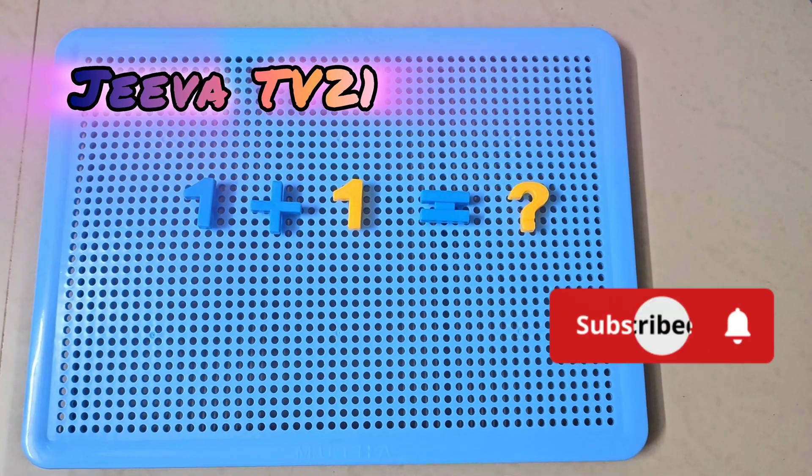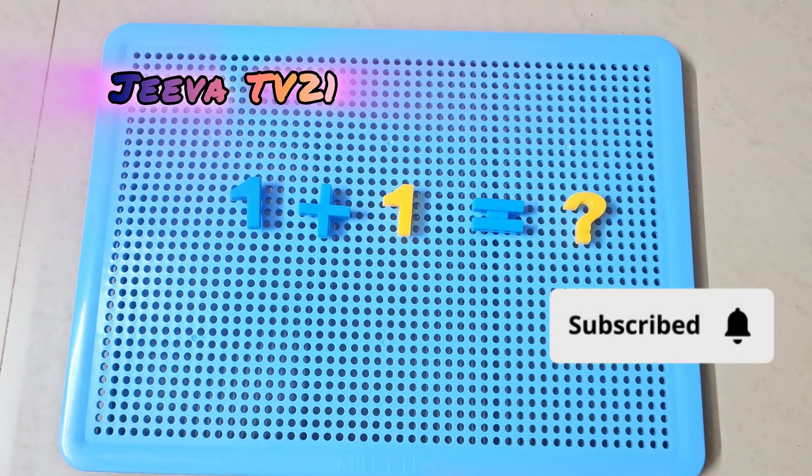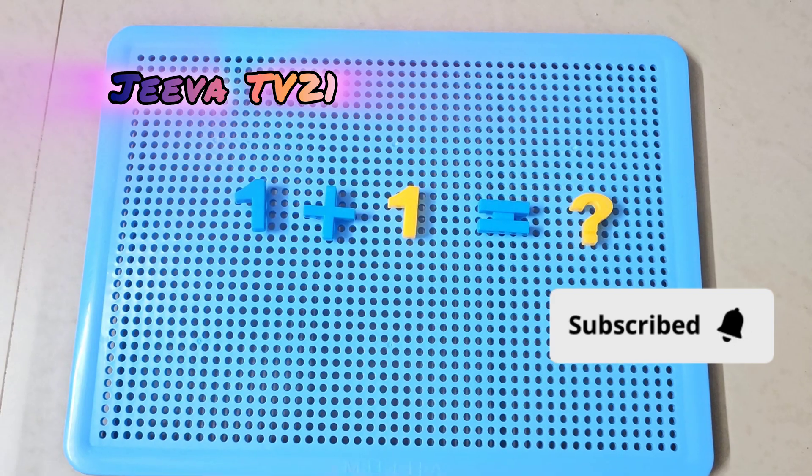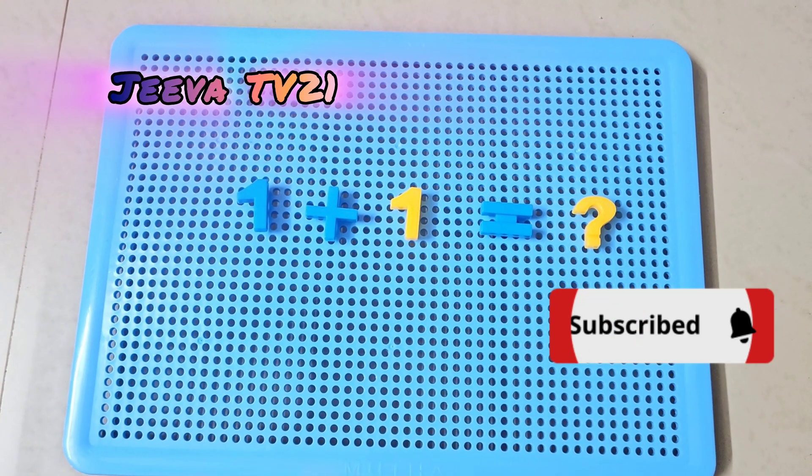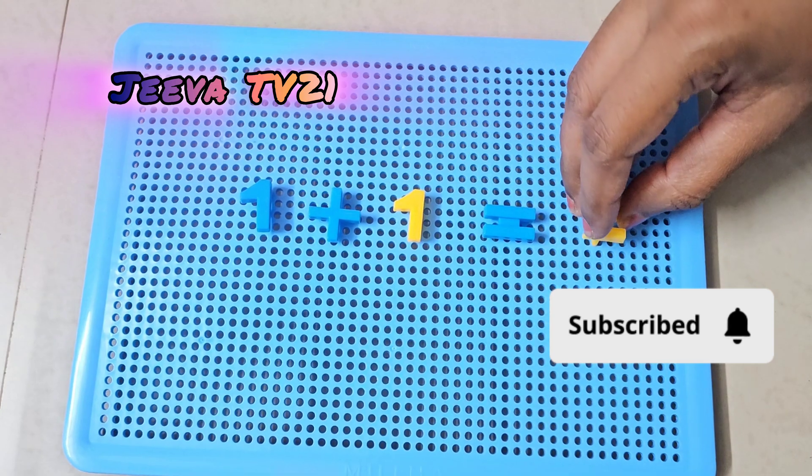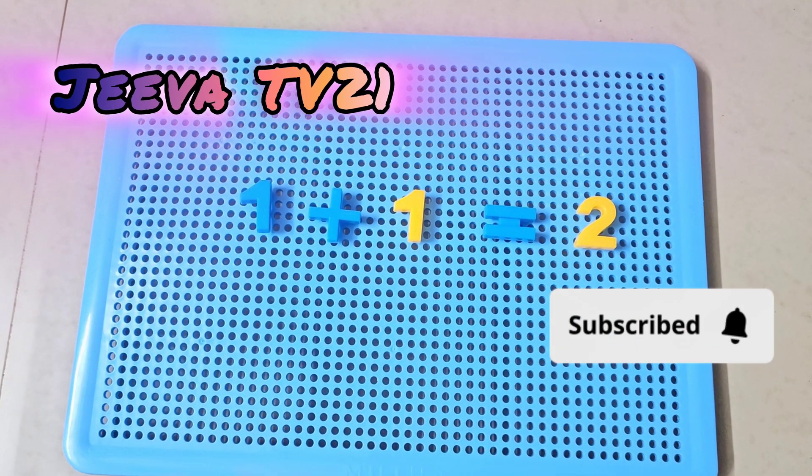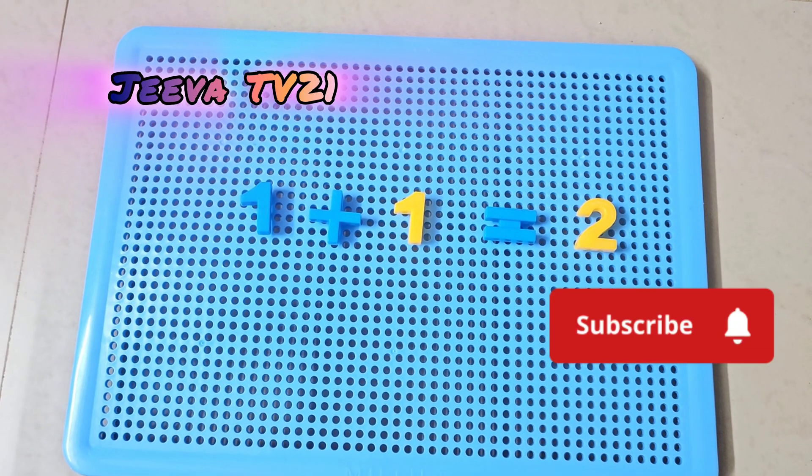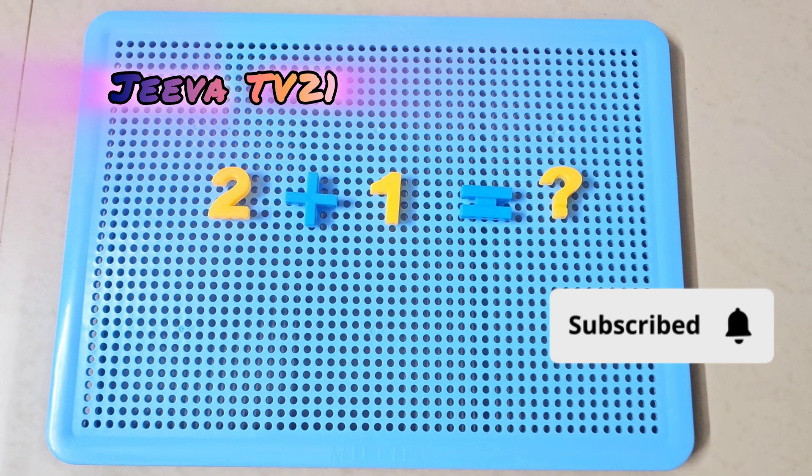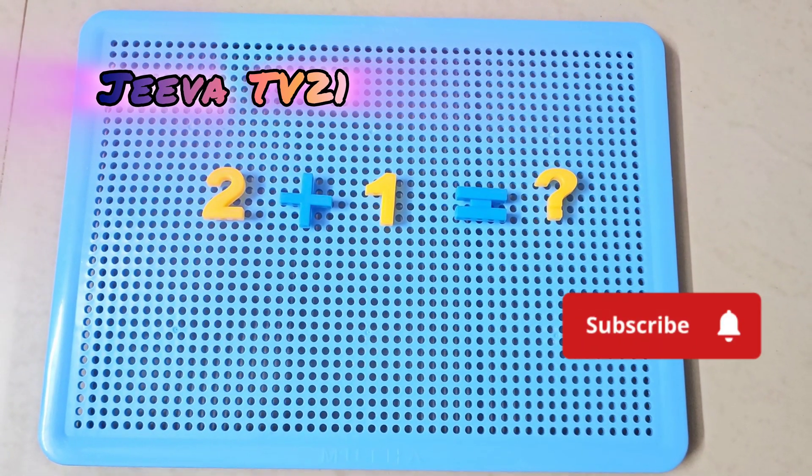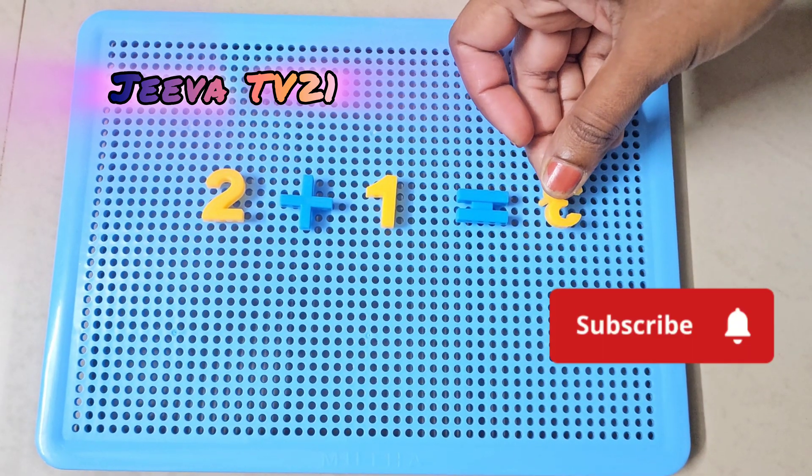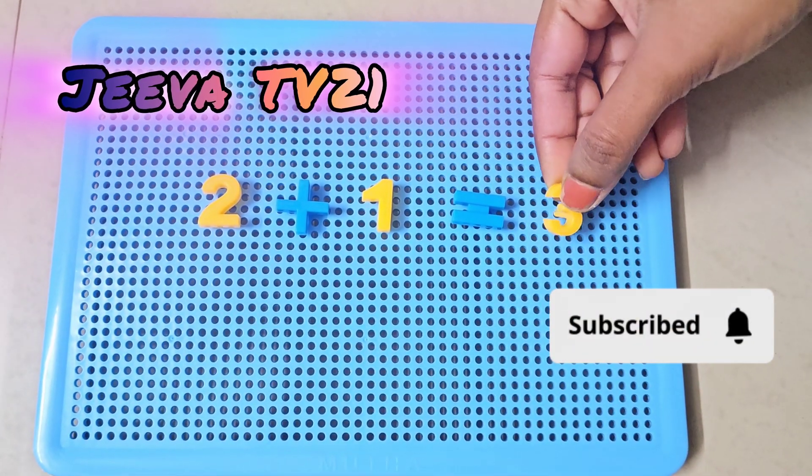First is 1 plus 1, so there's a question mark - how much is 1 plus 1? 1 plus 1 is 2. Now let's see what's 2 plus 1. 2 plus 1 is 3.